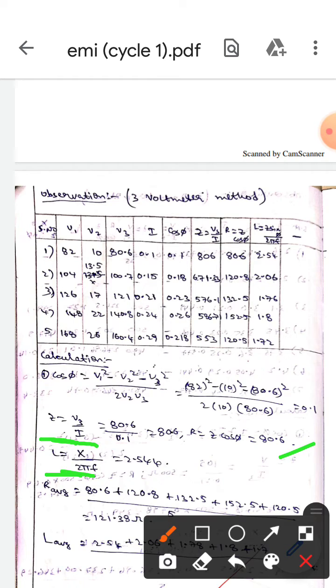And for finding the L value we use X by 2πf, whereas X equals Z sin phi.